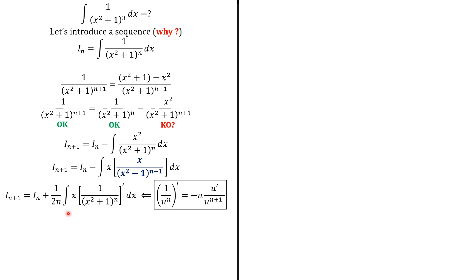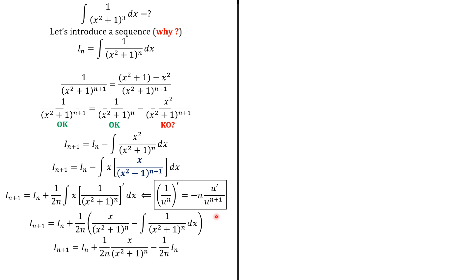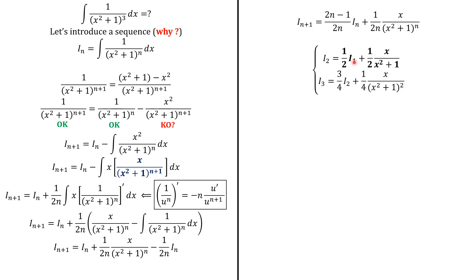Now we can use integration by parts. This gives us x multiplied by that function, minus the integral of the derivative of x — which is 1 — multiplied by the same function. That integral is essentially I_n. So we obtain a relationship between I_{n+1} and I_n. Grouping the terms, we arrive at the recurrence relation.